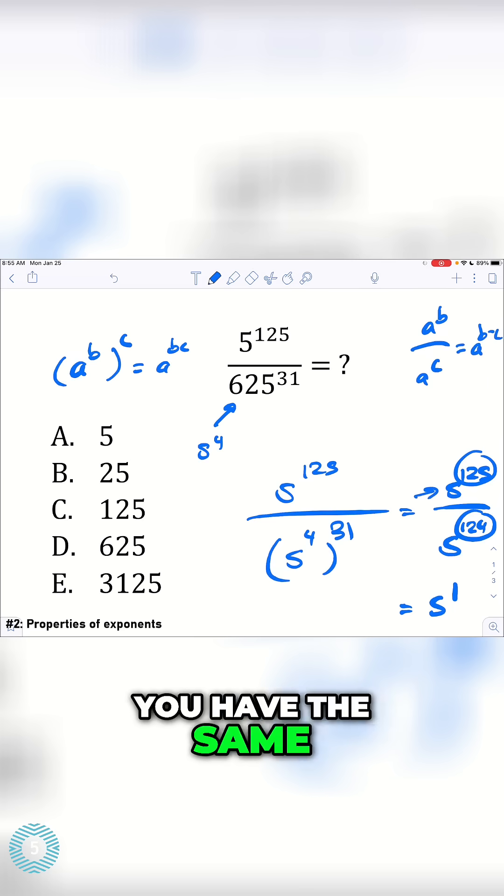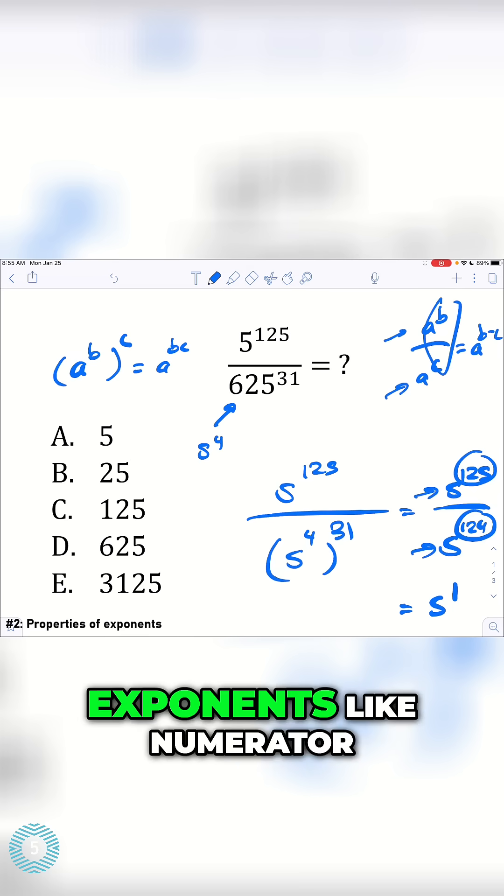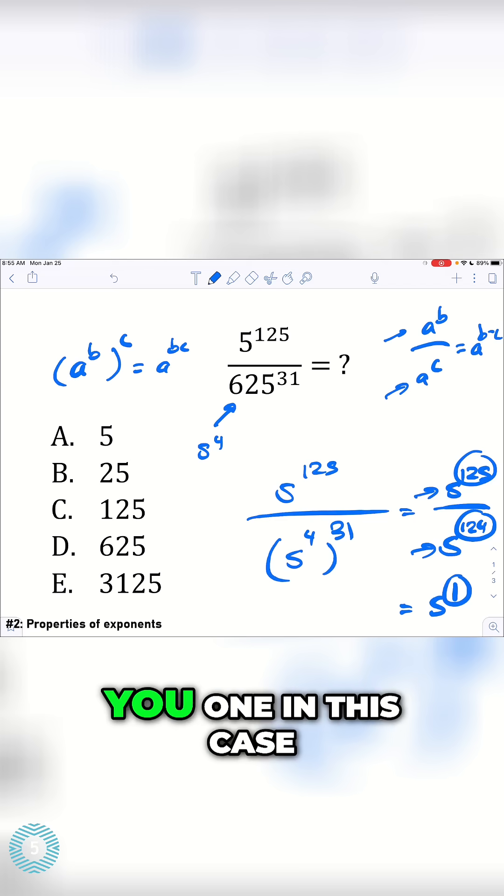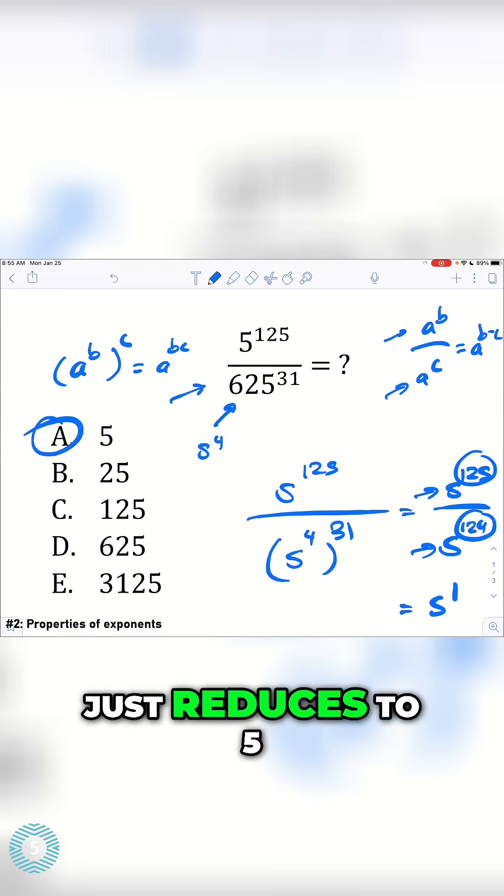If you have the same base of 5, or in this case a, you just subtract the exponents like numerator minus denominator, and this just gives you 1 in this case. So your answer is just 5. This entire complex expression just reduces to 5.